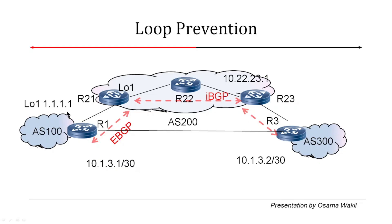This is the same slide we have been discussing in previous videos. What we have is IBGP in the above cloud between three routers, and we are running EBGP sessions between AS100 to AS200 and between AS100 to AS300.